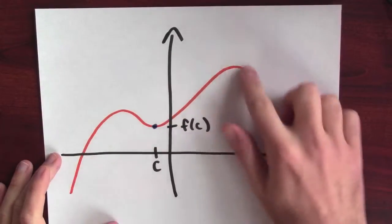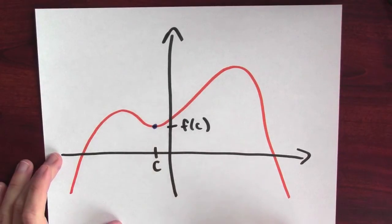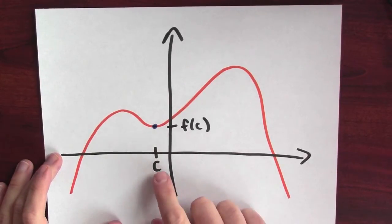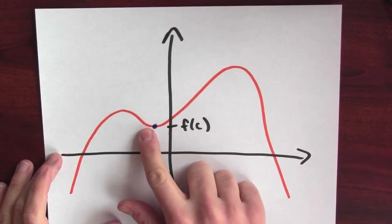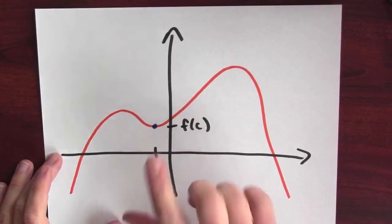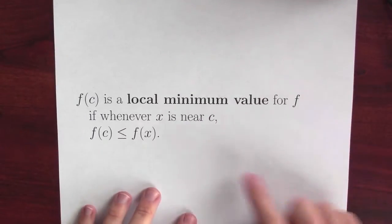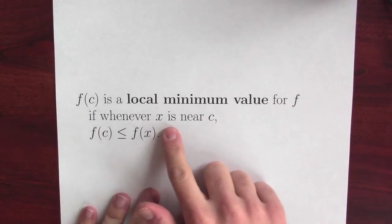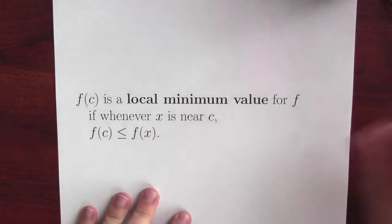We can give a similar sort of definition for the valleys. Here's that same graph again, and I've highlighted a local minimum on the graph of this function. Near the input c, f of c is the smallest output for the function. A little bit more precisely, I'm calling it a local minimum value because whenever x is near c, f of c is less than or equal to f of x.